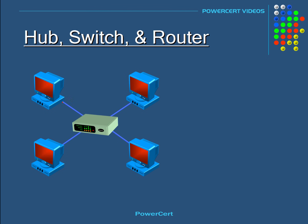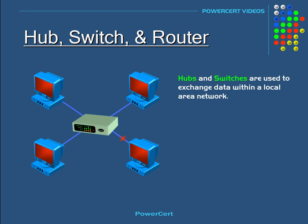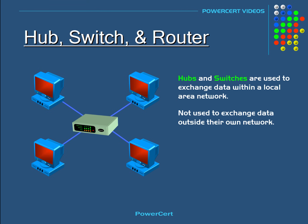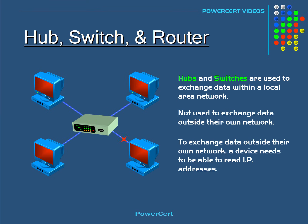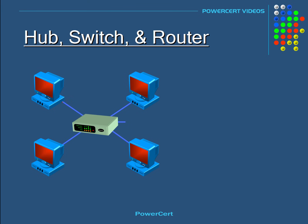Now hubs and switches are used to exchange data within a local area network, such as in your home network or in a business. They are not used to exchange data outside their own network, such as out on the internet. Because to exchange or route data outside their own network to another network, a device needs to be able to read IP addresses, and hubs and switches do not read IP addresses.